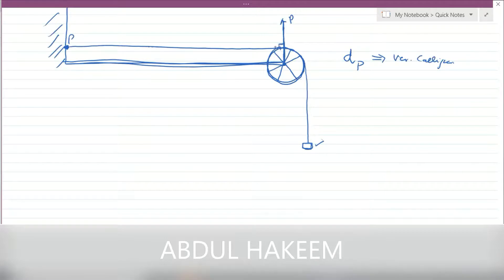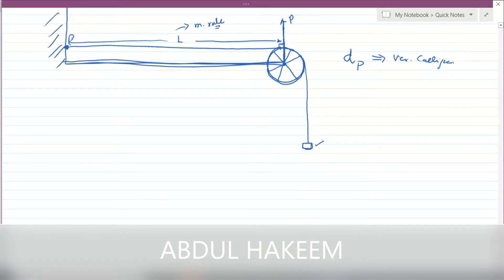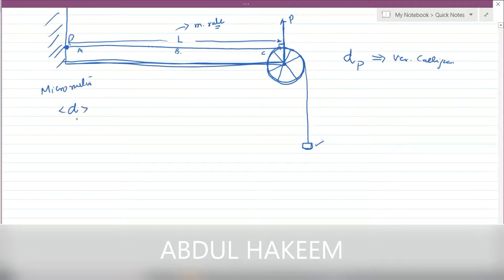After attaching the pointer perpendicular to the thread, we measure the length of the thread between the pointer and point B where the wire is fixed to the wall or block, using a meter rule. Then we measure the diameter of the wire at point A, at the center B, and near the pulley at C. After measuring the diameter at these three positions with a micrometer, we calculate the average diameter of the wire. So the three measurements are: diameter of the pulley with vernier caliper, length of the wire with meter rule, and diameter of the wire with micrometer. Then we arrange at least six masses.